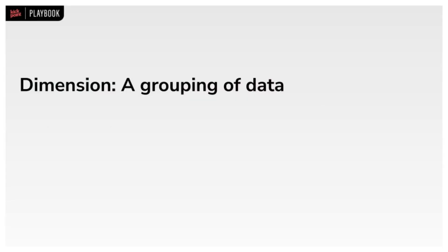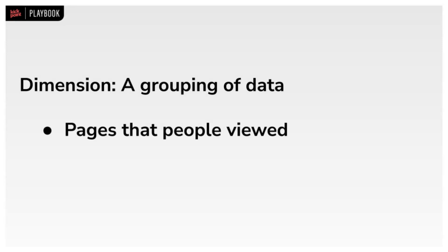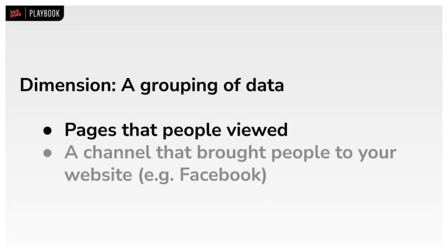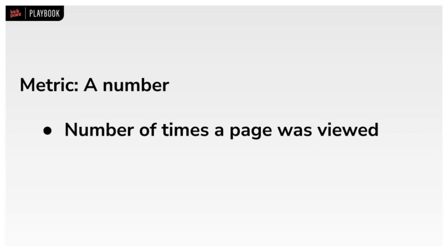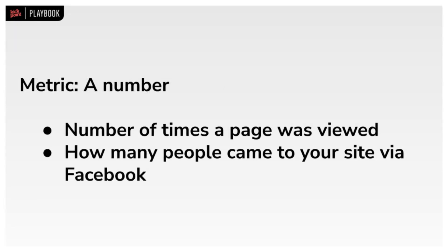First, I want to clarify some terminology I'm going to use in this video: dimensions and metrics. If you aren't familiar with those terms in an analytics context, a dimension is a grouping of data — for example, a specific page or a channel that brought people to your website, like Facebook. A metric is a number — the number of times that page was viewed, or the number of people who came to your site via Facebook.